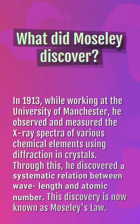What did Moseley discover? In 1913, while working at the University of Manchester, he observed and measured the X-ray spectra of various chemical elements using diffraction in crystals. Through this, he discovered a systematic relation between wavelength and atomic number. This discovery is now known as Moseley's law.